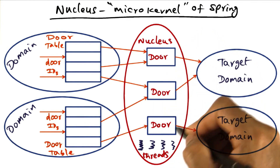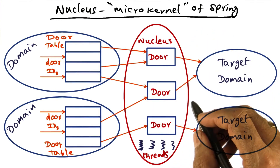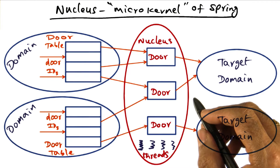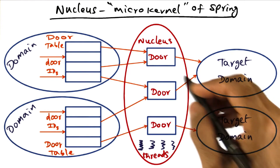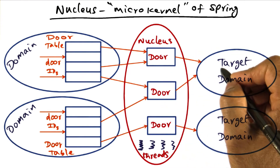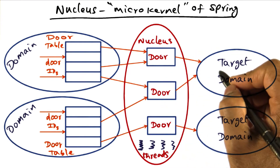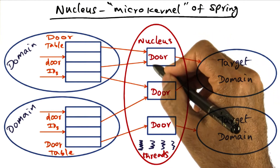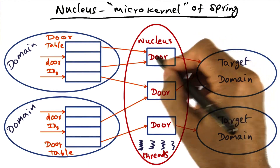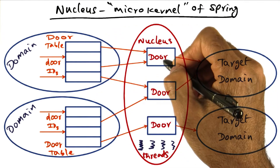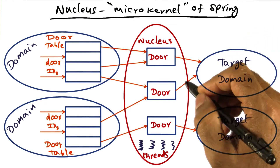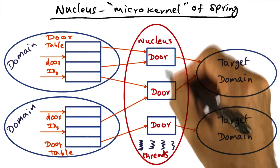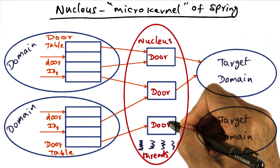There is also an abstraction called a door, which is a software capability to a domain. You can think of it with the real-life analogy of opening a door to get into a room. Similarly, if you have a handle to the door, you can open it and enter a target domain. That's the idea behind a door.